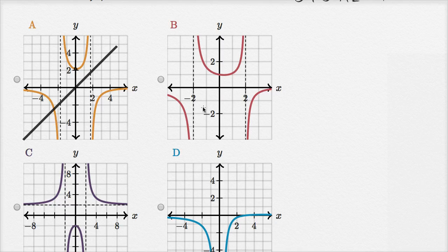So we can rule out, let's see, choice B does have a y-intercept, it looks like, just eyeballing it, at one. X equals zero, y is one. So this looks interesting.